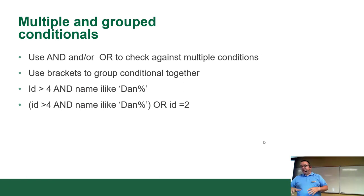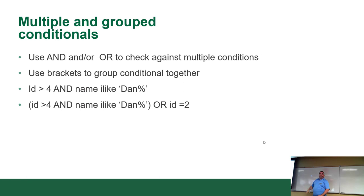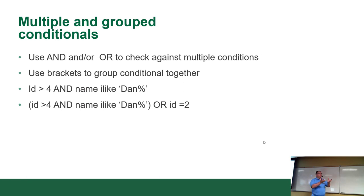For example: 'ID > 4 AND name ILIKE Dan%' returns records where the name starts with Dan and the ID is greater than four. The second example — 'ID > 4 AND name ILIKE Dan%' OR 'ID = 2' — returns anyone whose ID is greater than four with a name starting with Dan, or record number two. I'll be doing demos to make this clearer.